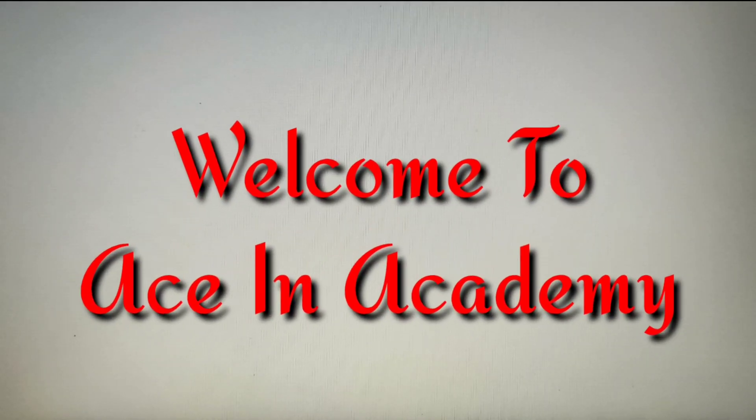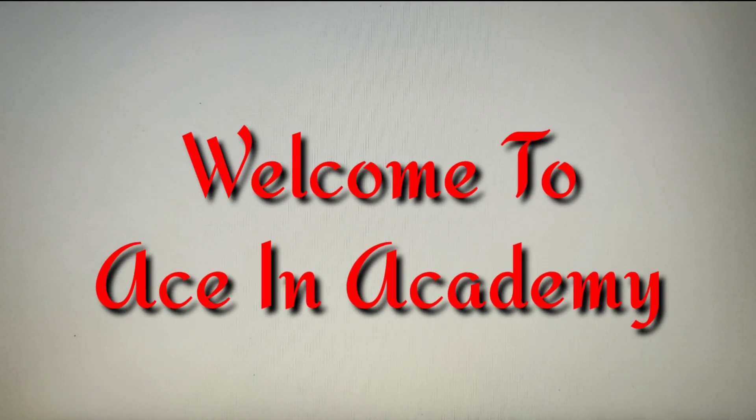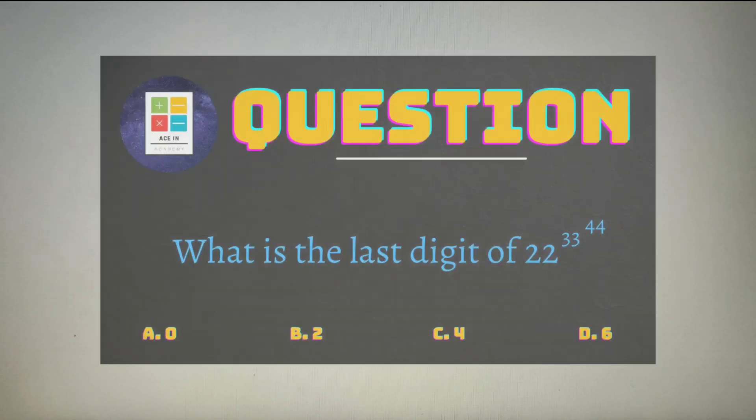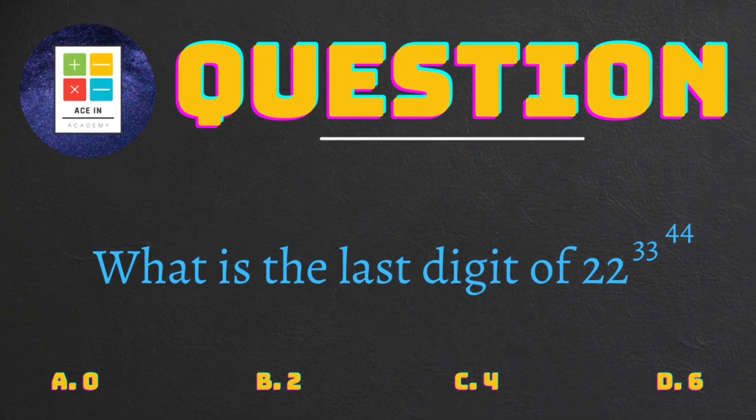Hello everyone, I'm Shampasari and welcome to ASIN Academy. As you can see from the title of this video, we'll solve a question: What is the last digit of 22 raised to the power 33 raised to the power 44? We are provided with four options: A) 0, B) 2, C) 4, and D) 6.